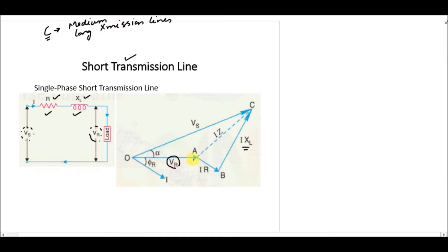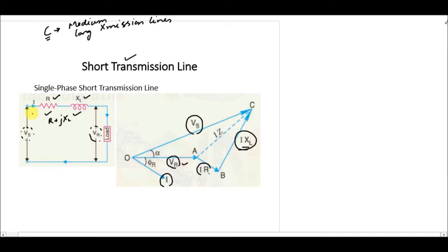With VR as reference at zero degrees, the voltages across the resistance (IR) and the inductive reactance are added as phasors. Their summation gives the voltage across the impedance Z = R + jXL. Adding VR and the voltage drop across the impedance gives the sending end voltage VS. The angle phi_r is between the receiving end voltage and load current, and alpha is the angle between VS and VR.